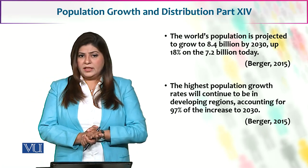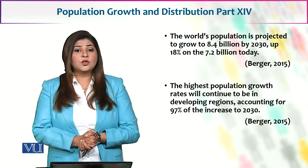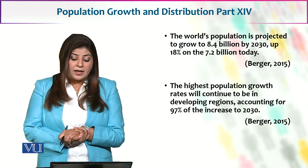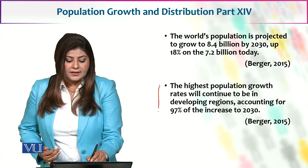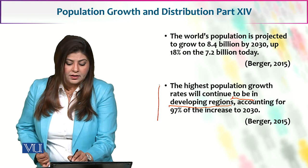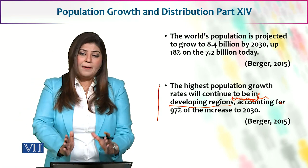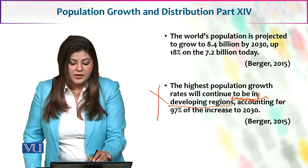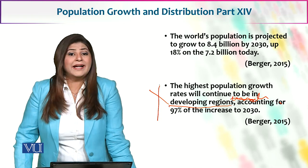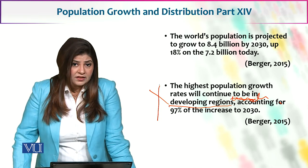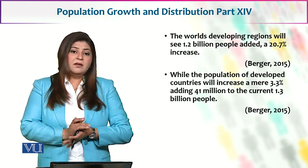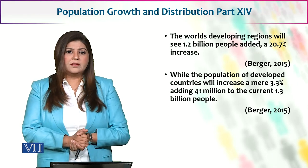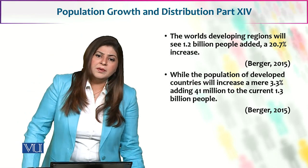The highest population growth rate will continue to be in the developing regions, accounting for 97% of the increase by 2030. Jaisa ki maine aapko bataya, yeh aapke developing regions hain — aur agar main underdeveloped ka word bhi add kar loon — to aapke jo developed regions hain wahan population mein izaafa nahi ho raha. Duniya mein jitna tezi ke saath izaafa ho raha hai uske liye developing aur underdeveloped regions zimmedar hain — 97% tak. Iske andar Pakistan bhi hai, India bhi hai, Malaysia bhi hai, Bangladesh bhi hai.